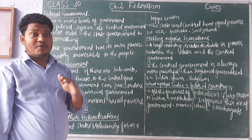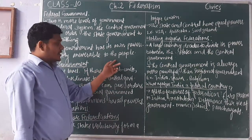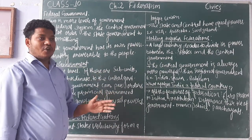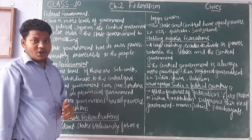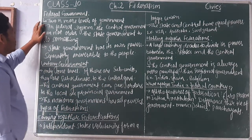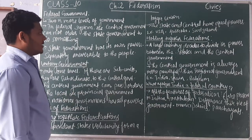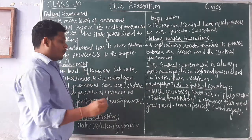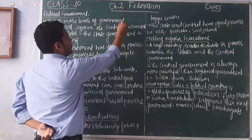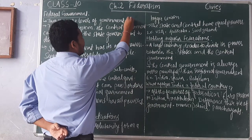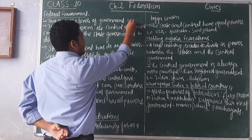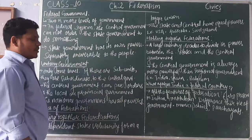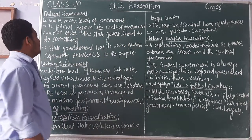Basically, we are studying the chapter of power sharing. At each level the power is shared between different levels of government or organs of government. There will be two or more levels of government. Take the example of India — we have three tiers of government: first is the central level, second is the state level, and third is the Panchayat or Municipal level.